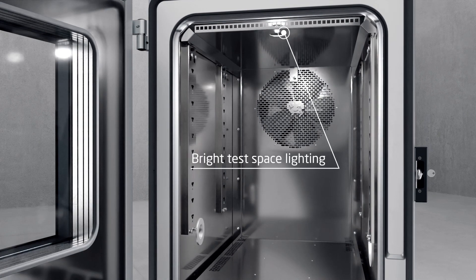Weiss Technik brings light into the test chamber. The new LED test chamber lighting illuminates the chamber evenly from above, ensuring optimal lighting conditions for inspecting the test specimen and making it easier to bring in and prepare your test specimen setup. When the door is open, it is more than 50% brighter than the previously used halogen lighting, and the LED technology also significantly reduces the heat input into the test chamber.